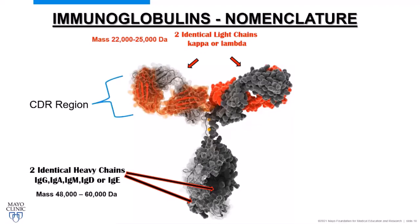We're going to talk about the CDR region, which stands for complementarity-determining region. This is the part of the immunoglobulin we'll take advantage of for mass measurements — a unique amino acid sequence that targets certain proteins, unique for each immunoglobulin. We sometimes call this the Fab region, which stands for fragment antigen-binding, and it includes a little more than just the CDR.